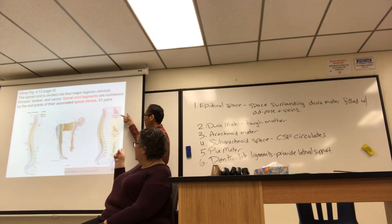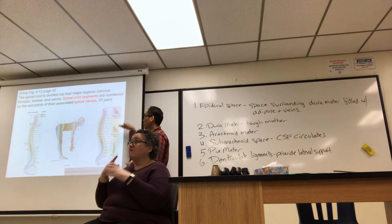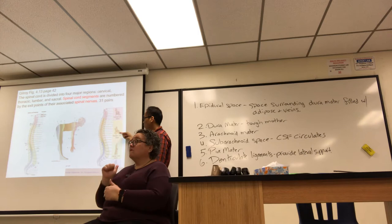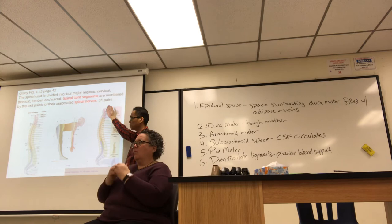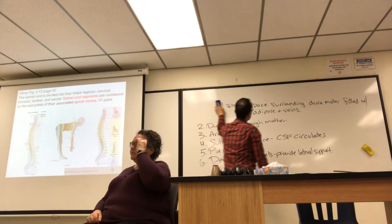Damage at a certain level of the spinal cord cuts you off from the brain. The higher up the damage, the more function you lose. The further down the damage, the more function you preserve, because more of the cord can still communicate with the brain.